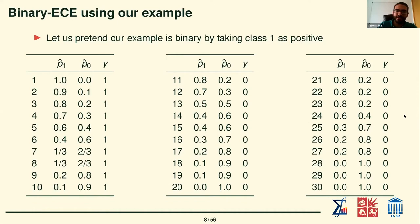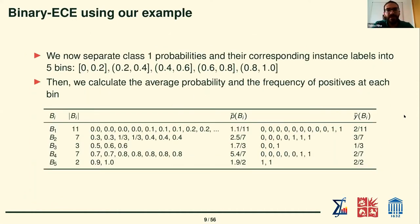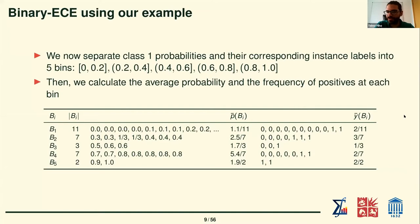I separate the probabilities of class one into five bins — an arbitrary number chosen to help visualize what is happening in the reliability diagrams. Using equal-width bins gives widths of 0.2: the first goes from 0 to 0.2, the second from 0.2 to 0.4, then 0.4 to 0.6, and so on. With this partition, I can separate the scores from the previous slide accordingly.